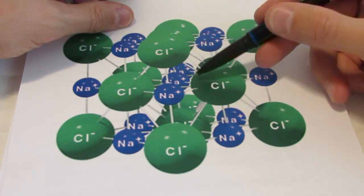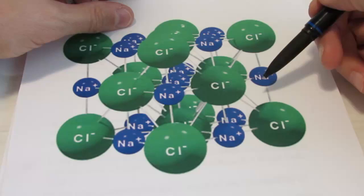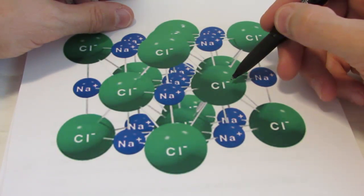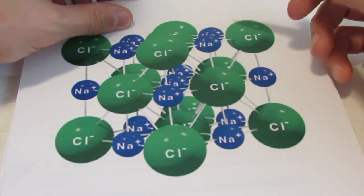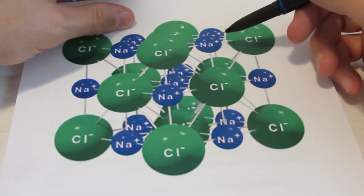This chloride ion, if you notice it's larger than the sodium ions, think about why. Remember negative ions are larger than the atom from which they came. Positive ions are smaller than the atom from which they came.